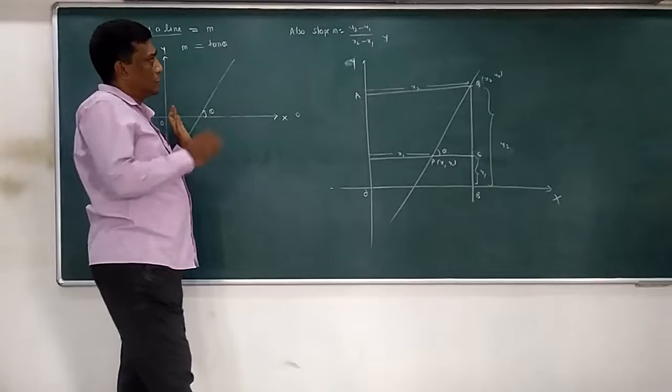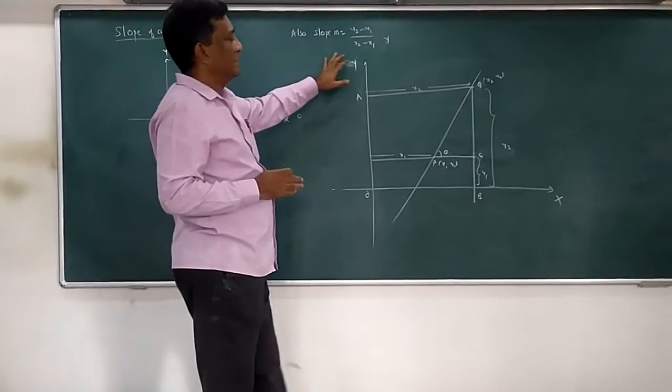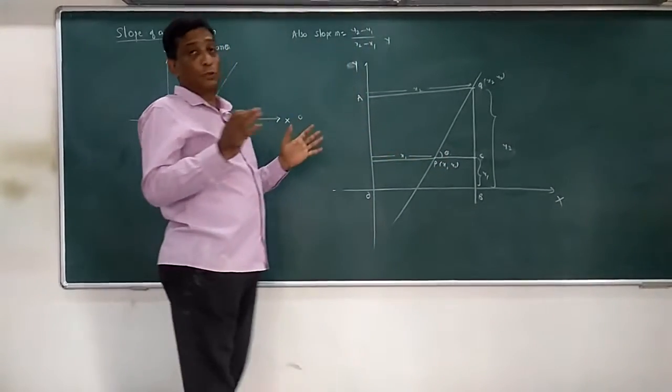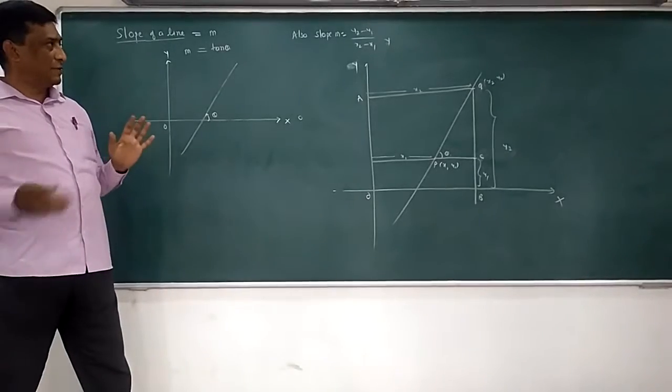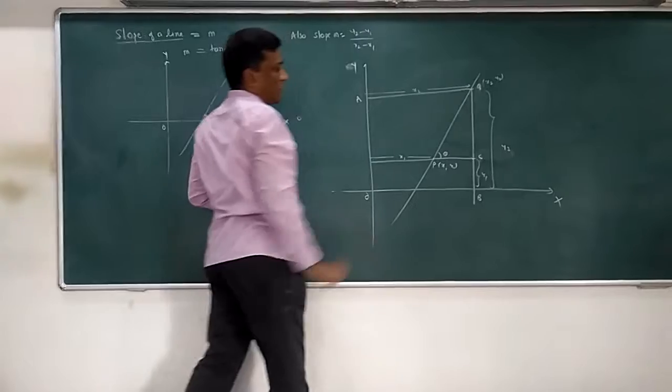Now even though slopes are the same, there are two formulas. One is tan theta, second is y2 minus y1 upon x2 minus x1. How come slopes are the same and formulas are different? Actually they look like different, but they are not different, they are all the same. I will show you how.